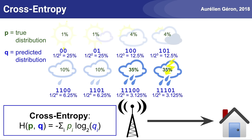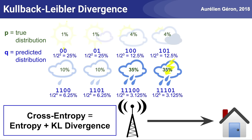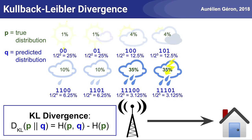If our predictions are perfect — that is, the predicted distribution equals the true distribution — then the cross-entropy is simply equal to the entropy. But if the distributions differ, then the cross-entropy will be greater than the entropy by some number of bits. This amount by which the cross-entropy exceeds the entropy is called the relative entropy, or more commonly the Kullback-Leibler divergence, or KL divergence. So cross-entropy is equal to the entropy plus the KL divergence, or equivalently, D_KL(P||Q) equals H(P,Q) minus H(P). In this example, the cross-entropy is 4.58 bits and the entropy is 2.23 bits, so the KL divergence is 2.35 bits.